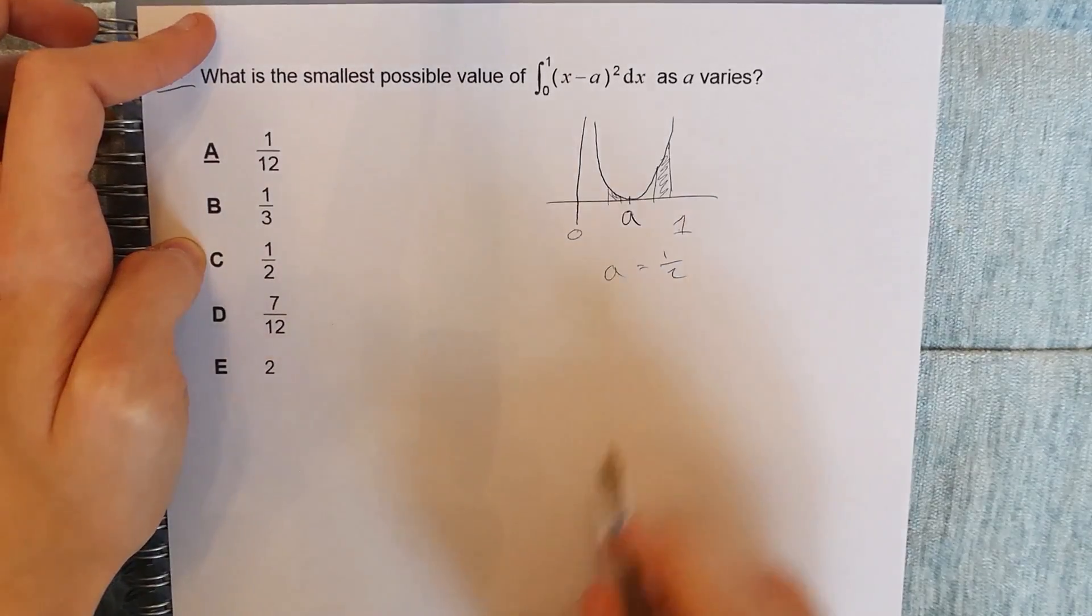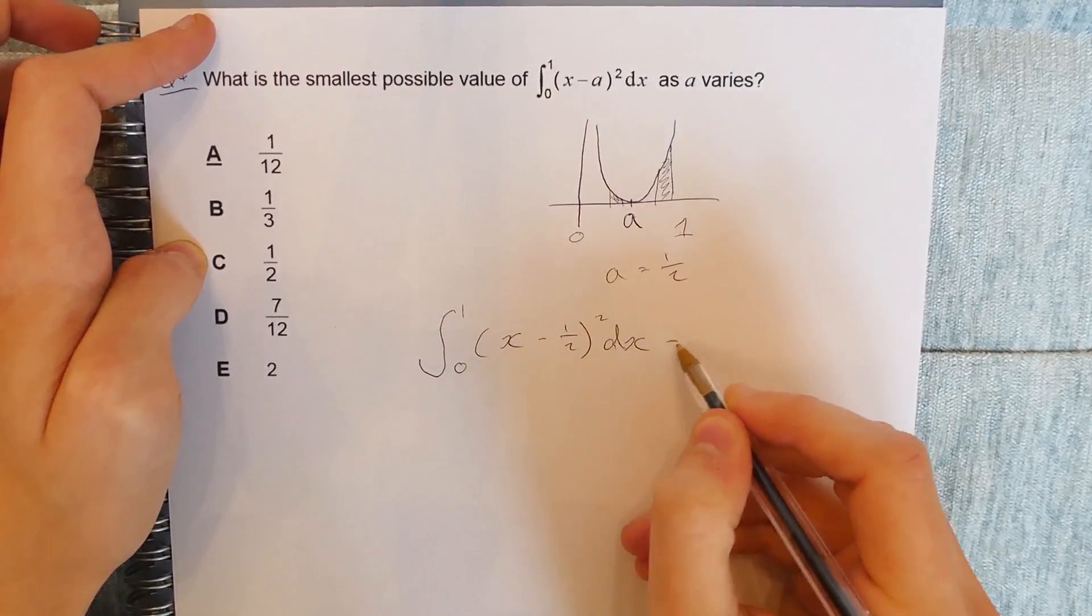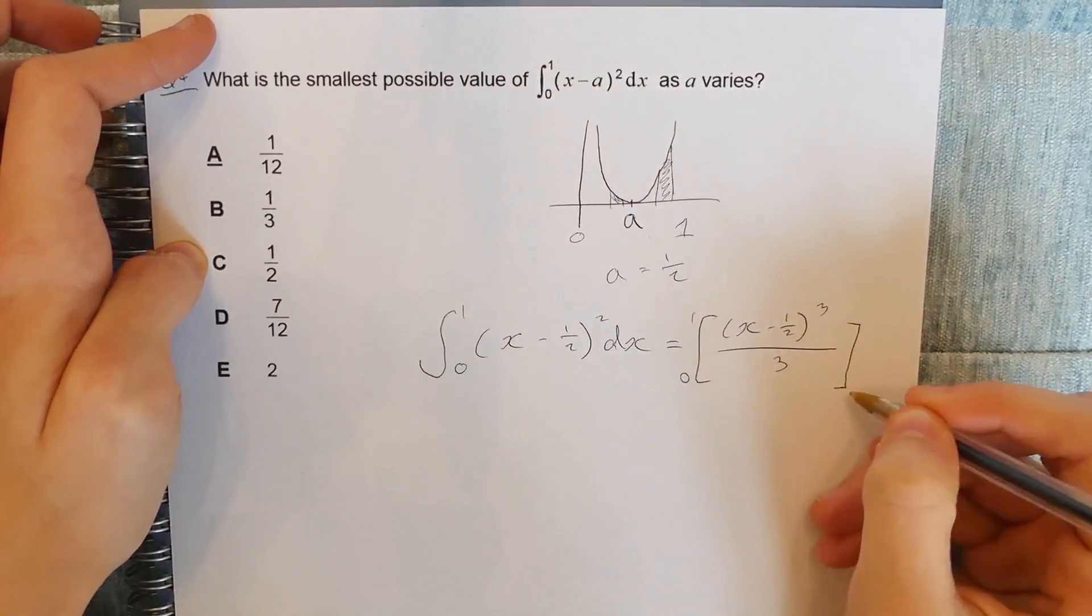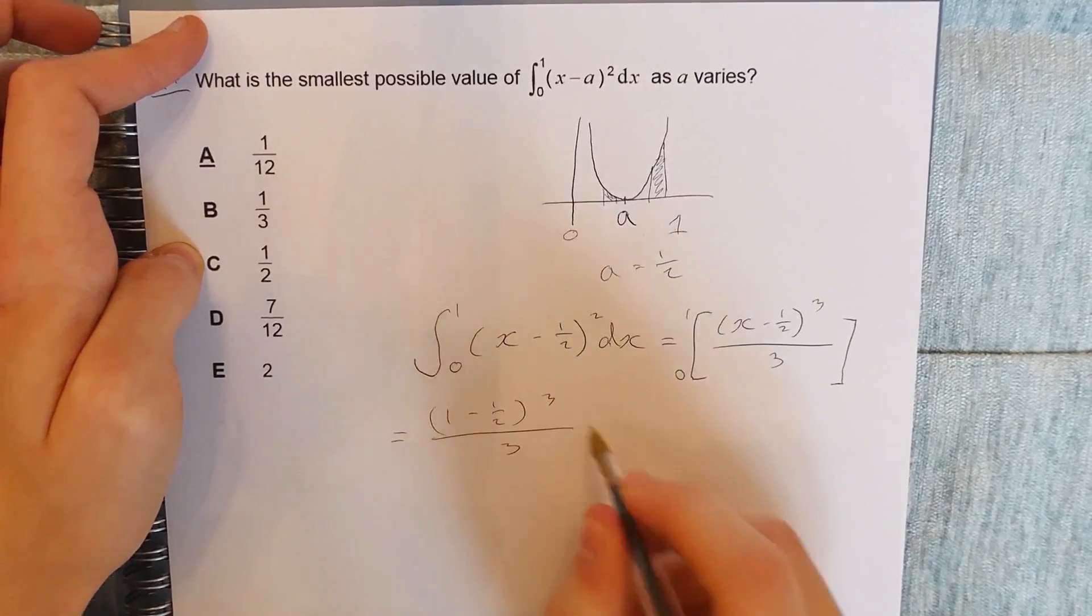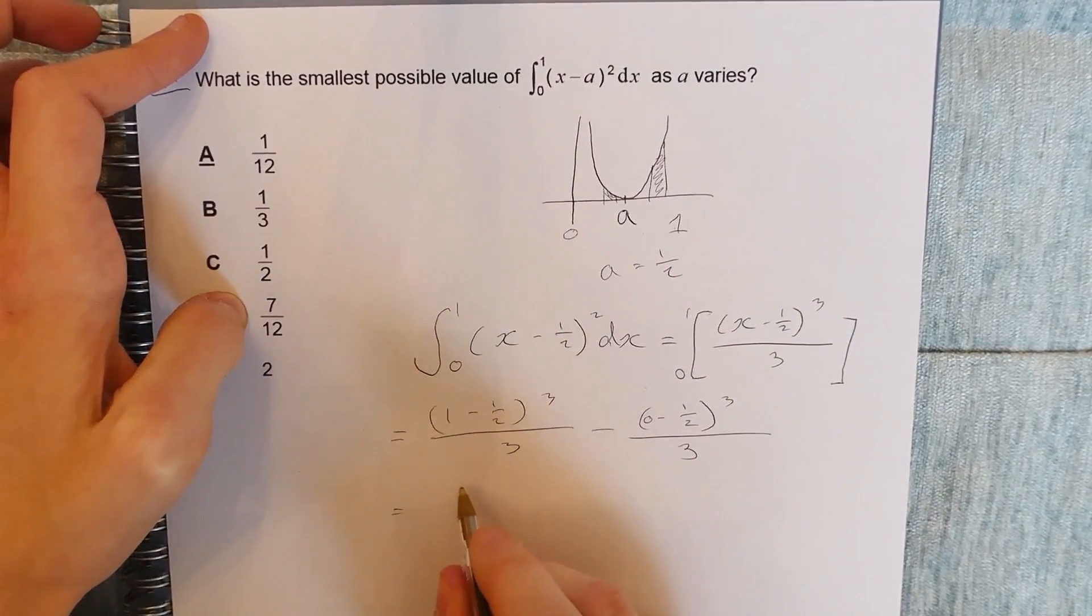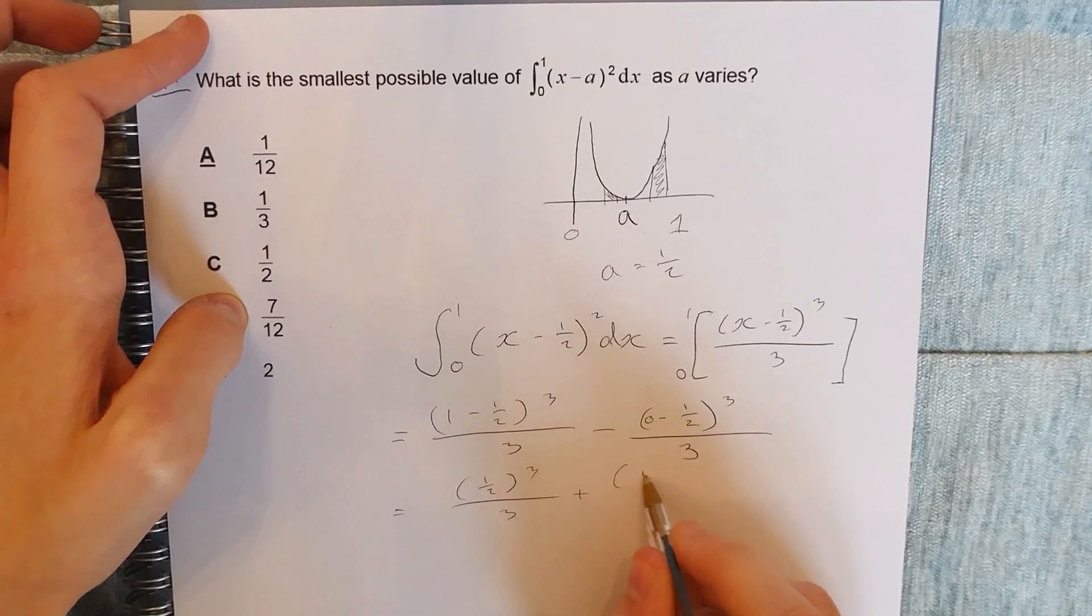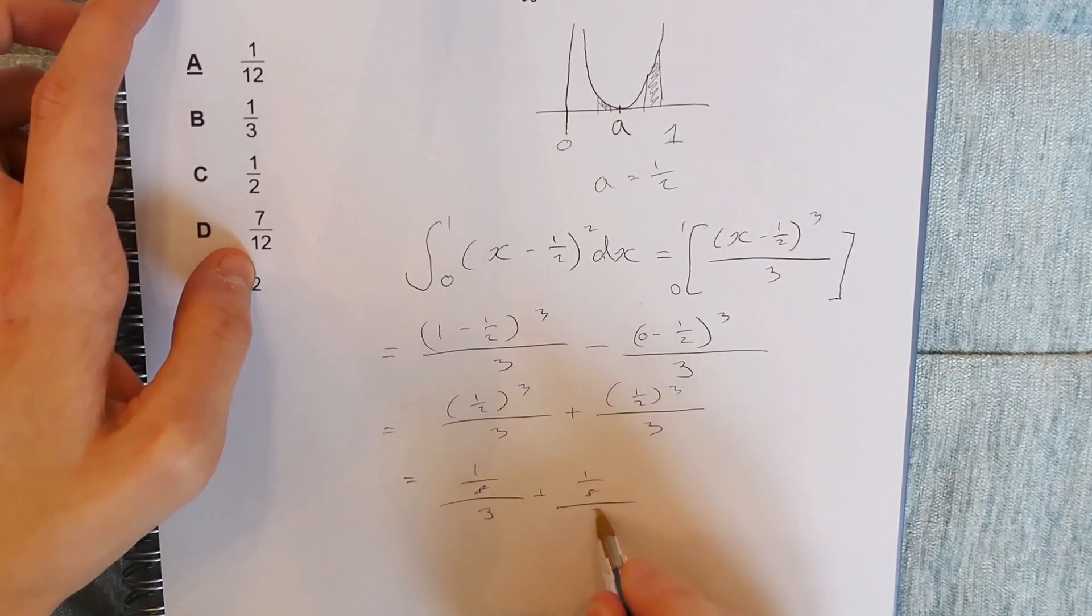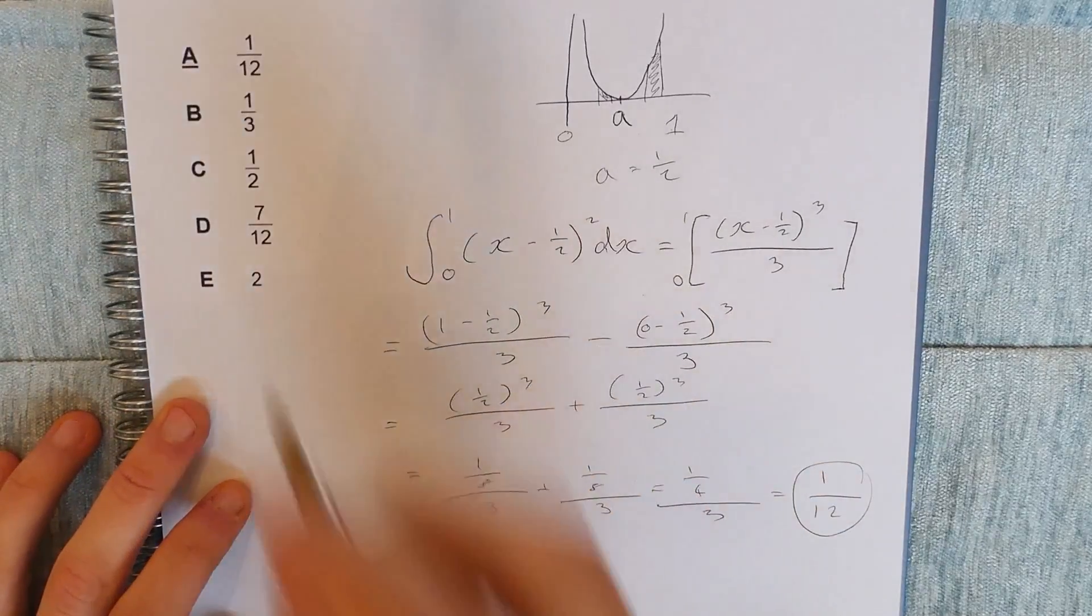So therefore we're going to use a as equal to a half. So we're going to do our integral from 0 to 1 of x minus half squared with respect to x, which is going to be x minus half cubed over 3. And now we just have to sub in some of our limits. So 1 minus half cubed over 3 minus 0 minus half cubed over 3. So we can again expand this. So it's half cubed over 3 minus, or in this case because of minusing a minus, plus half cubed over 3, which is going to be equal to 1 eighth over 3 plus 1 eighth over 3, quarter over 3, which is equal to 1 twelfth. So therefore our smallest possible value is 1 twelfth, and the answer is A.